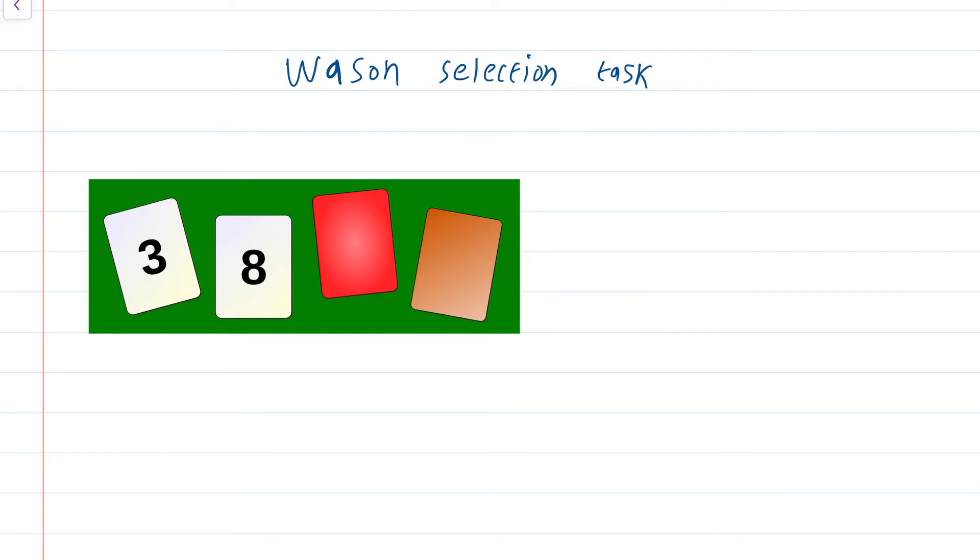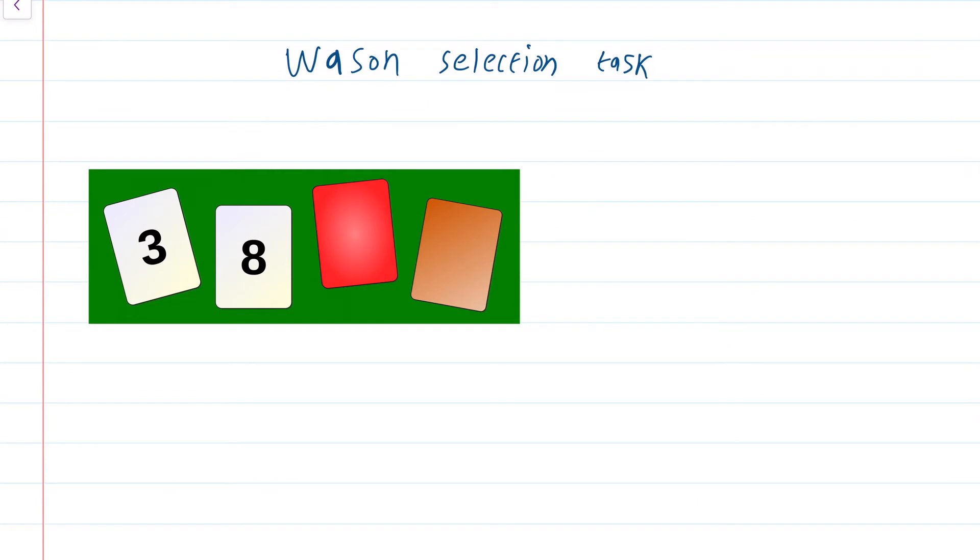Suppose you want to test the following statement: behind a card whose face has an even number, the face has colour red. That is whenever you see one face that has an even number, then the opposite side must be red in colour.